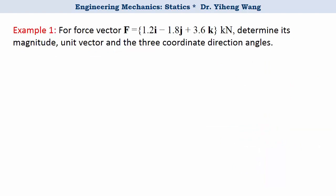Let's look at this example. We are given a force vector in Cartesian vector form, and we need to determine its magnitude, its unit vector, as well as the three coordinate direction angles alpha, beta, and gamma.